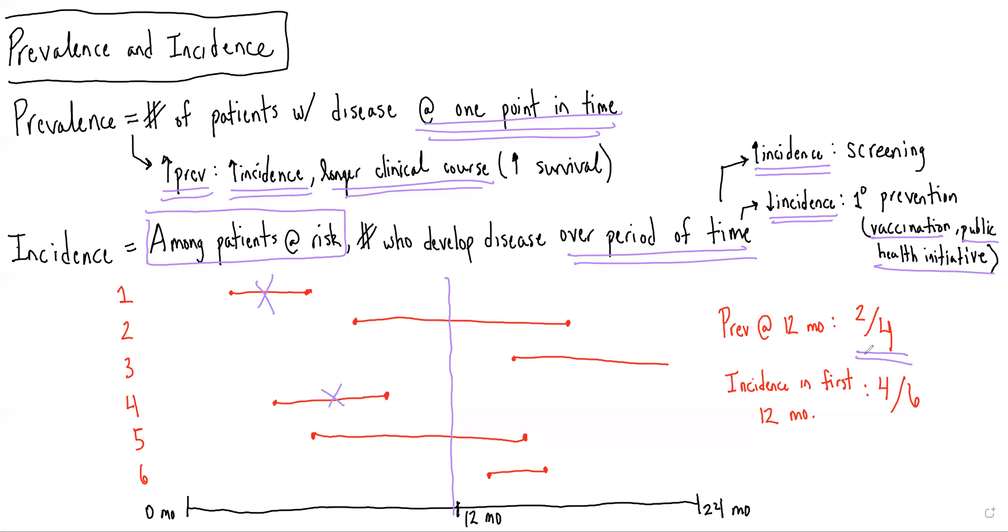If we were instead to look at the incidence over the first 12 months, we would say that there are 6 patients who do not have the disease at the beginning of the period, and who therefore are among our at-risk population. And among these 6 patients, we see that there is 1, 2, 3, 4 who developed the disease in the first 12 months, and therefore the incidence in the first 12 months is 4 out of 6.